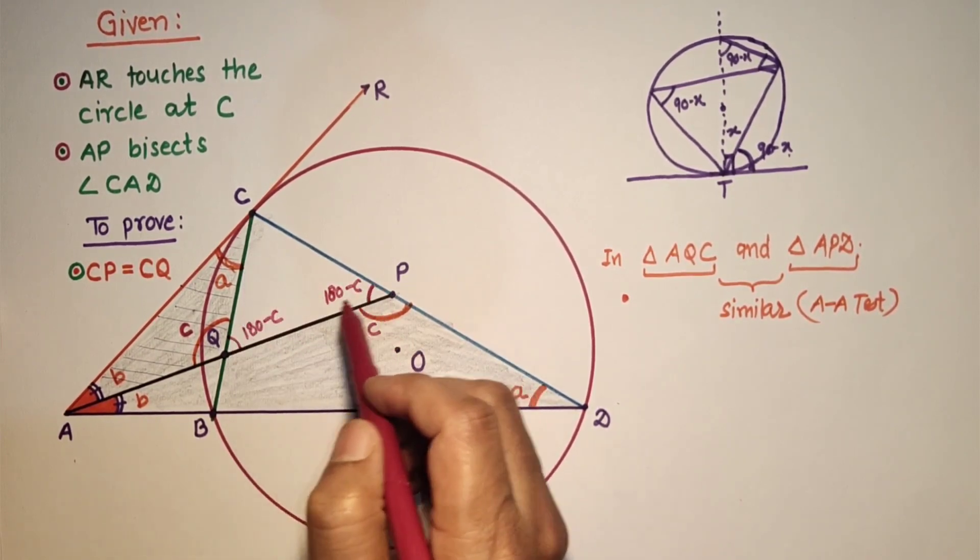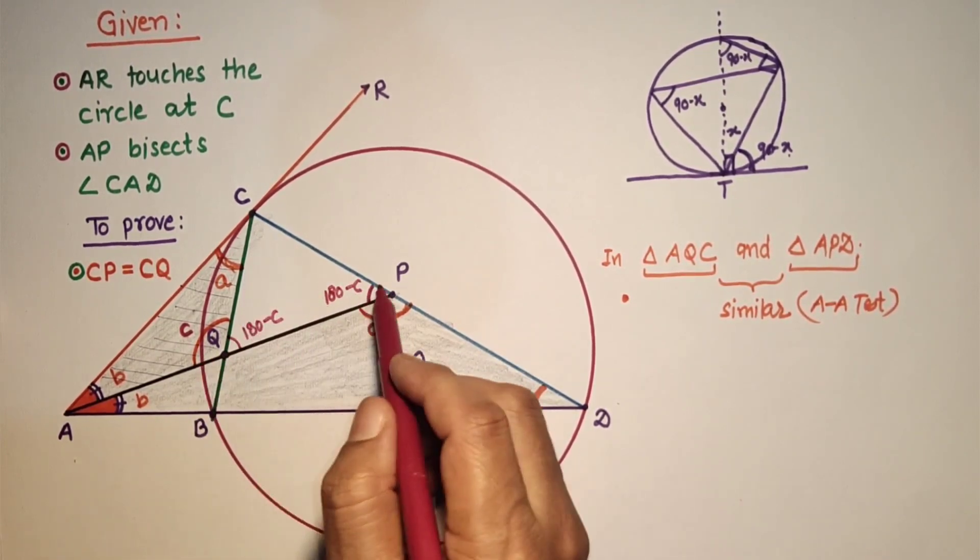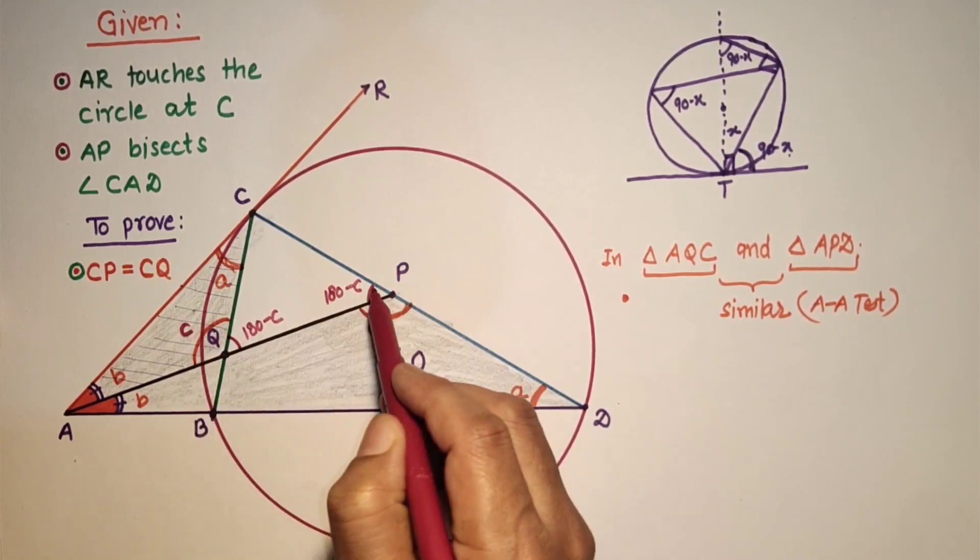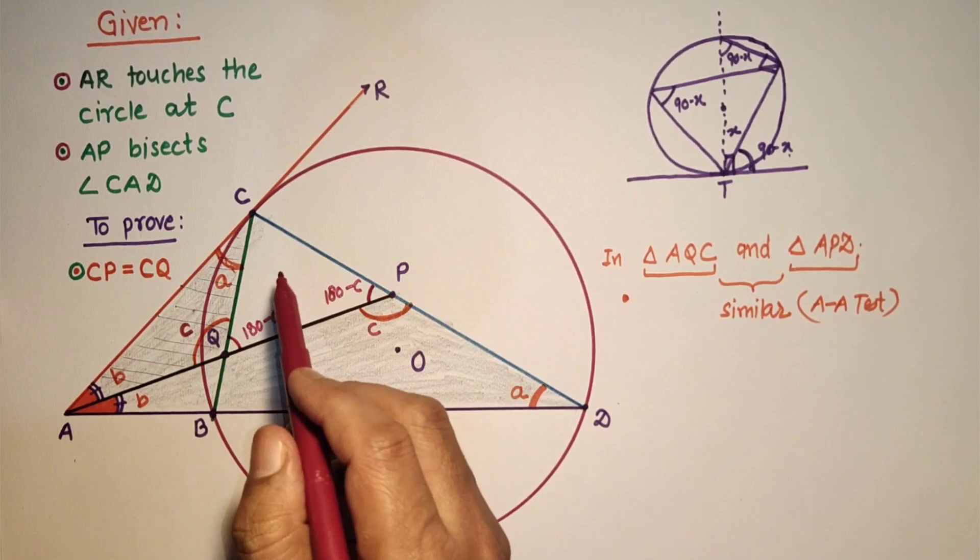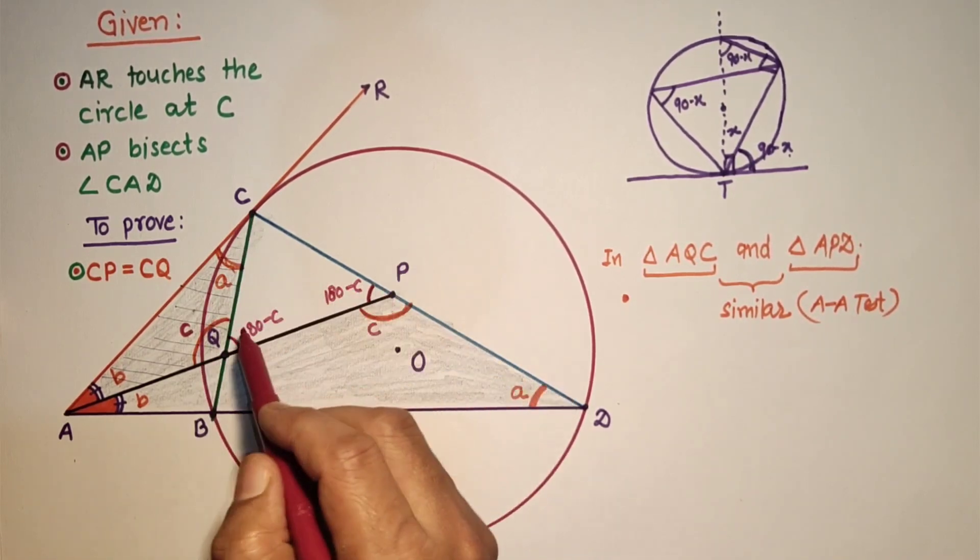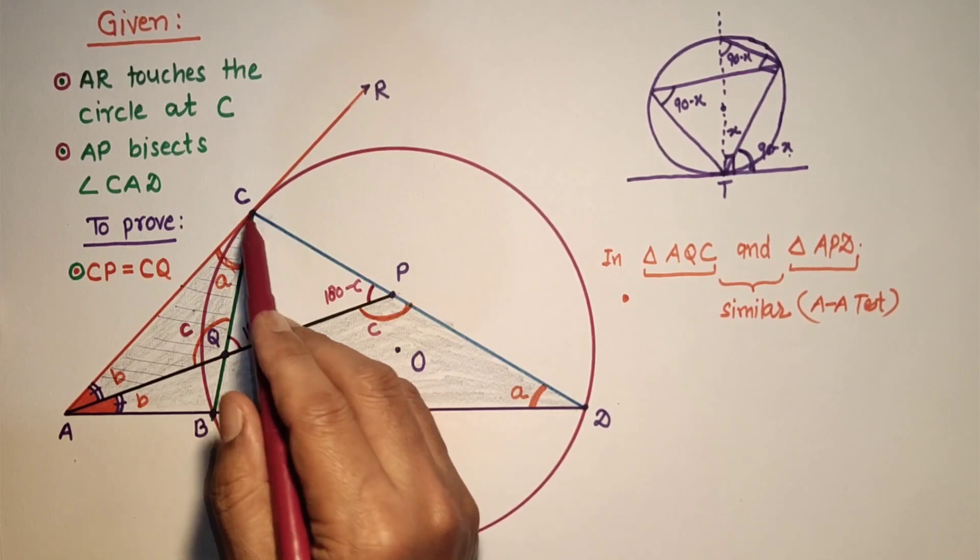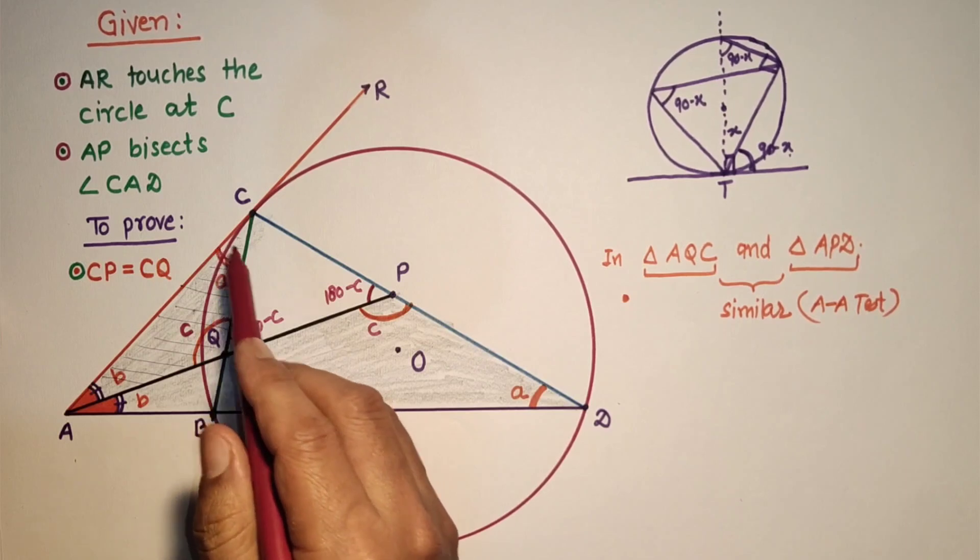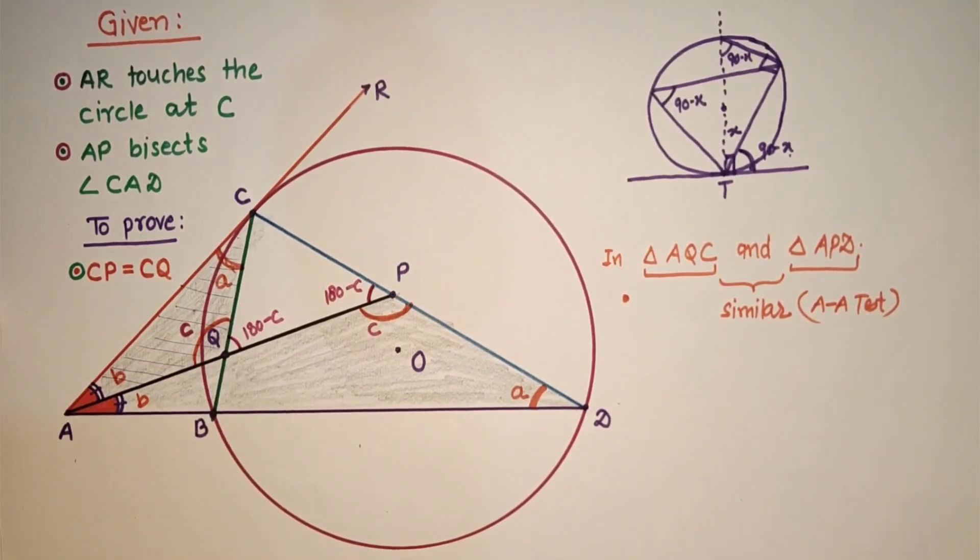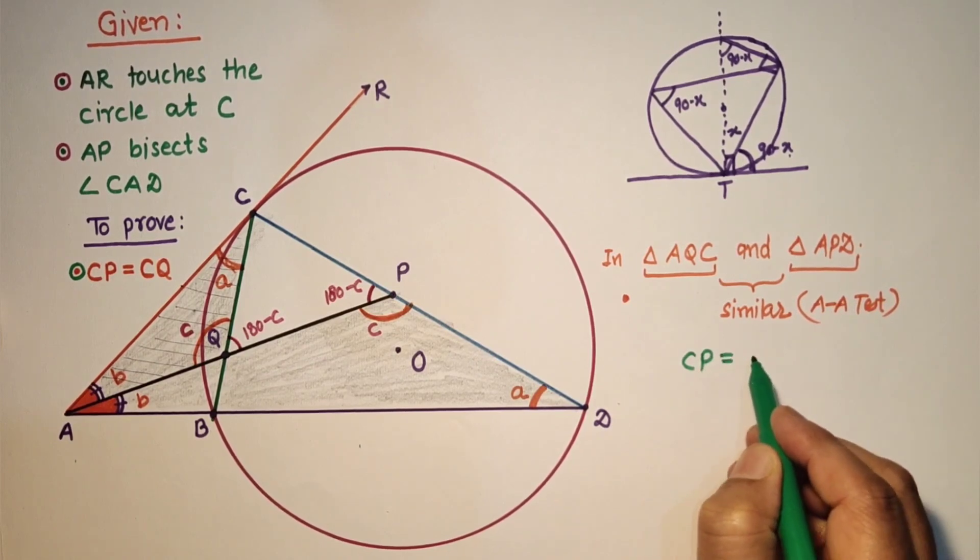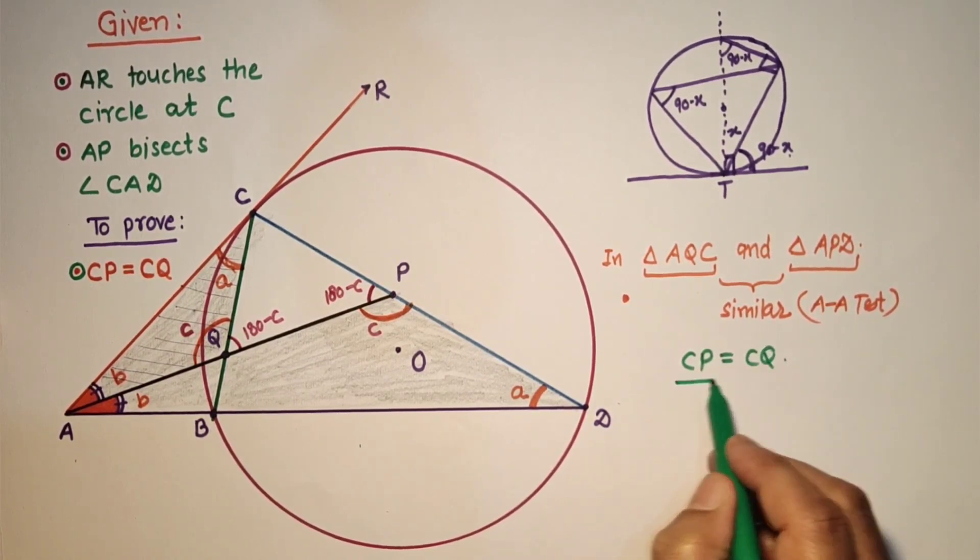Now since these two angles are equal, in triangle CQP these two base angles are equal, then sides opposite to equal angles will also be equal. It means side opposite to this angle is CQ, so CP and CQ are equal. We can say CP is equal to CQ. Hence proved.